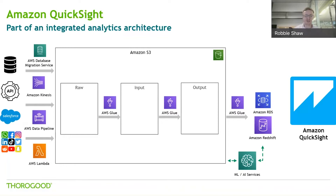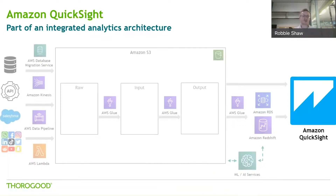You can connect QuickSight feeding data directly from Redshift, directly from RDS, or alternatively you can read directly from S3. So that's how it fits into the architecture - let's focus back in on just Amazon QuickSight itself.